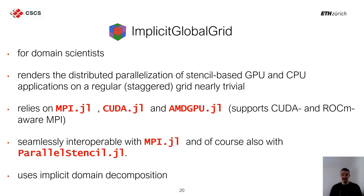ImplicitGlobalGrid is designed for domain scientists, and experience has shown it works well and is quite easily accessible to them. It enables distributed parallelization of stencil-based GPU applications on regular staggered grids. It relies on MPI.jl, CUDA.jl, and AMDGPU.jl, and supports CUDA, ROCm, and MPI. Moreover, it is completely seamlessly interoperable with MPI.jl and with many other packages, including ParallelStencil.